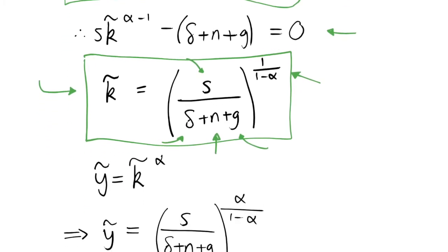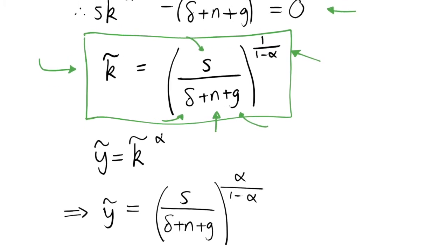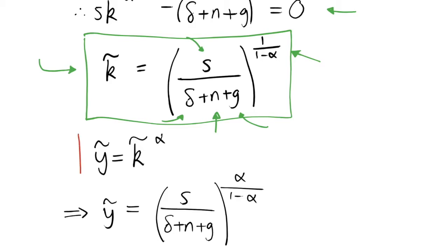And so this is our first value or our first quantity in balanced growth path. What we also might want to look at is our output per effective worker, and to find this we can just note this relationship that we found in the previous video, which said that y tilde was just equal to k tilde to the power of alpha.